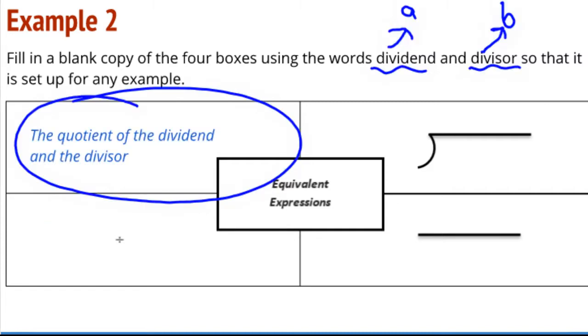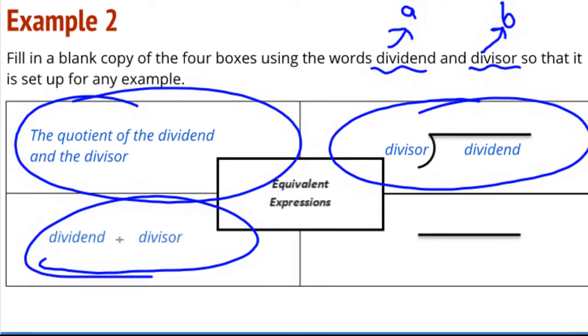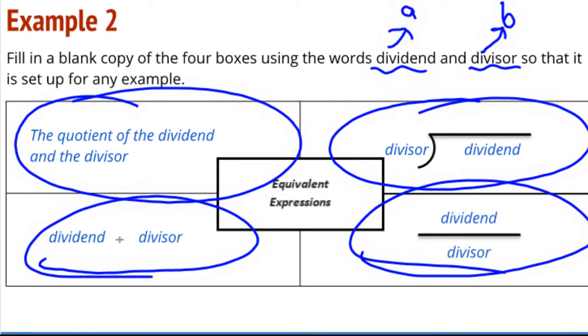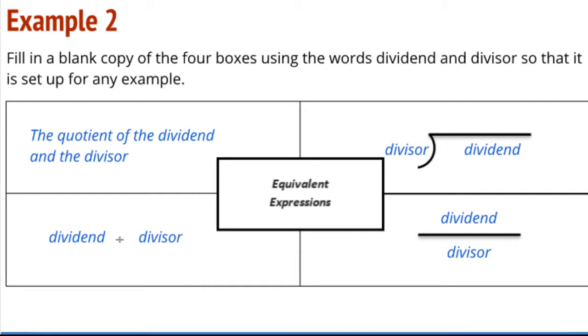So think about how you would write a phrase using the words dividend and divisor. Hopefully your brain says it's the quotient of the dividend and the divisor. Then think about how you would put the words dividend and divisor into the regular division symbol. Then how would we write it with the regular form? Dividend divided by the divisor. And then we have it in the fraction form. So once again, we are working a lot in this lesson on establishing the relationship between these four ways of showing division.